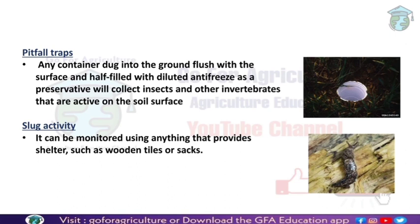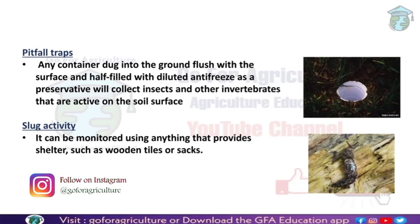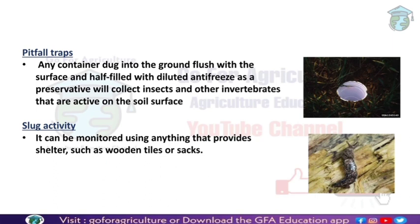Pitfall traps are placed on the ground and are very cheap — they can even be made at home using small plastic tumblers, buckets, or mugs. These are fixed in the ground with water, kerosene, or sticky grease added inside. Crawling insects fall into the trap, allowing us to capture and count them.